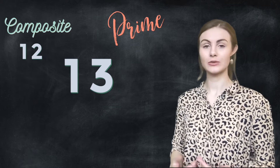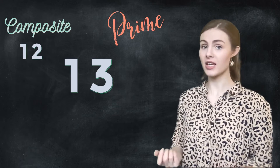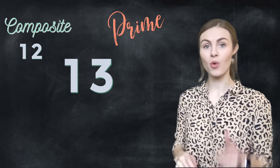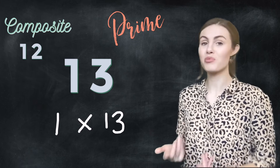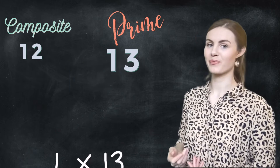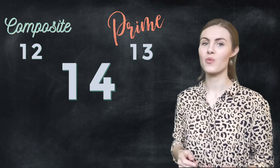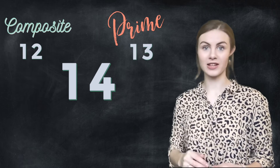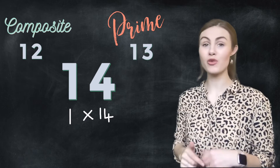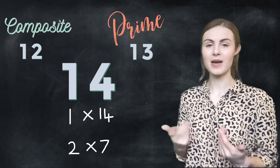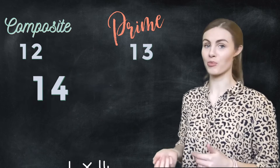We're going to factor 13. The number 13 only has two factors: one and 13, which means it's a prime number. Now 14 — when we write down the factors we've got one and 14, but we've also got two and seven. That means 14 is a composite number, so it's not prime.